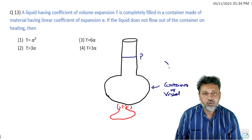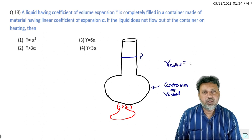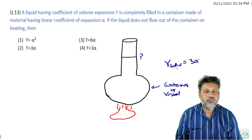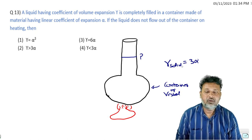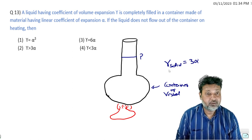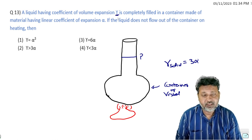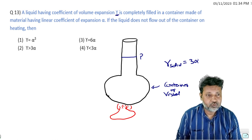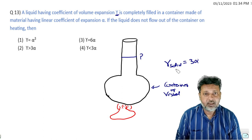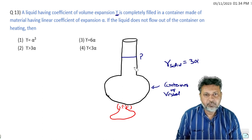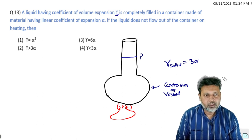Solid का जो expansion होता है वो 3 alpha के equal होता है - volume expansion of solid is equal to 3 alpha. लेकिन यह जो gamma है यह liquid का expansion है। जब यह solid expand होगा तो liquid का level गिरेगा - मान लो इसके अंदर पानी भरा हुआ है।